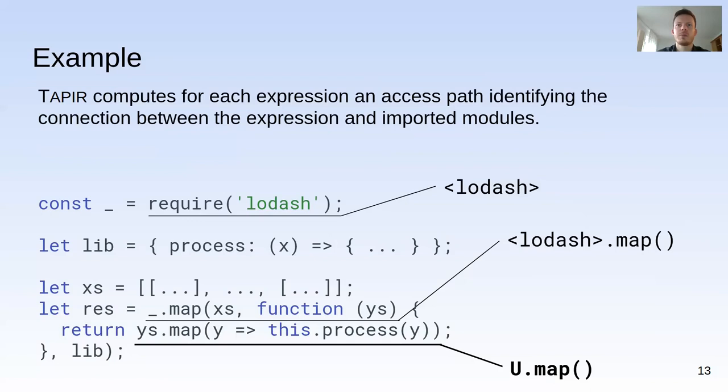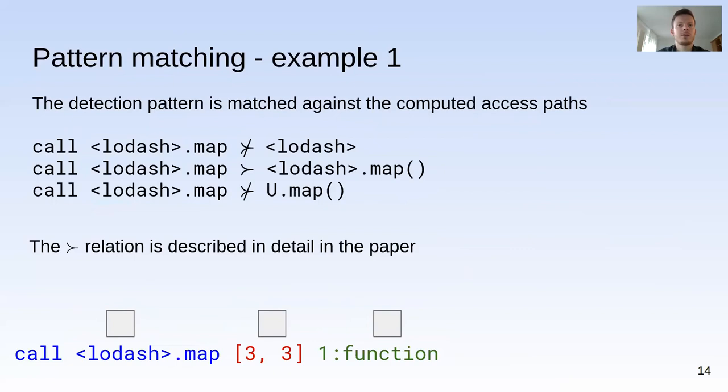Access parts containing a 'u' representing unknown may still match with detection patterns of a more relaxed form, but we will not consider these in this talk. Note these three access parts are only a subset of the access parts computed for this program. After the access parts have been computed, they are matched against the detection patterns. A special relation, formally described in the paper, determines whether an access part matches a detection pattern. In this case, the second access part matches the lodash detection pattern.